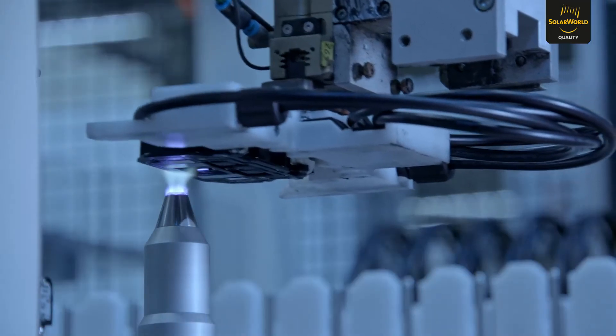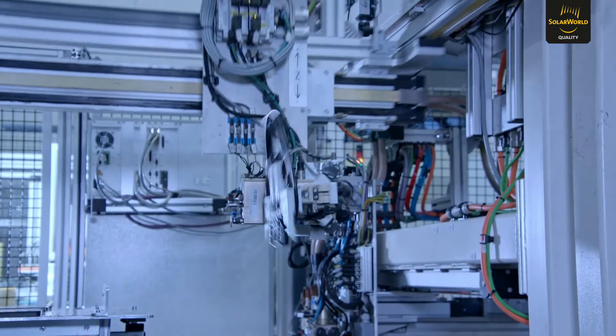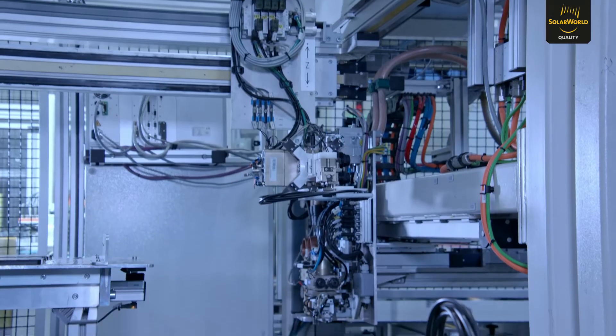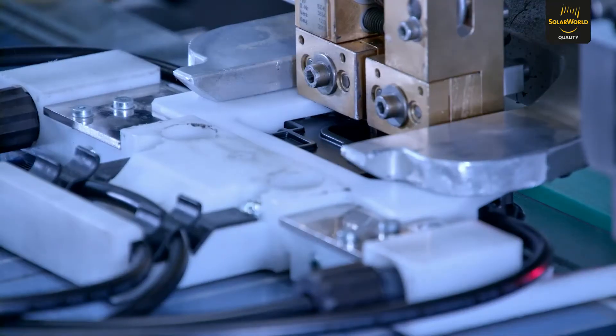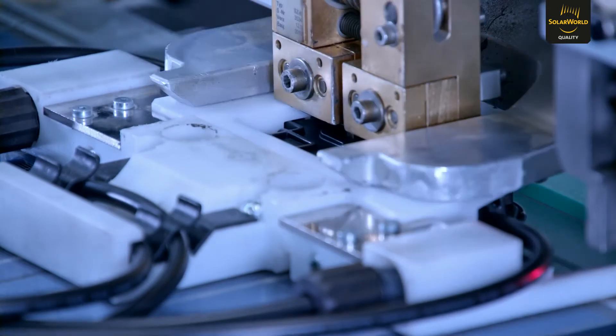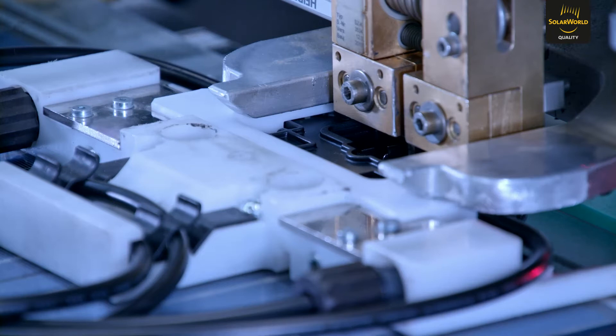Our quest for proven quality is even reflected in the parts that are hidden. For example, the flat junction boxes. Each socket and the bypass diodes it contains are checked automatically. Welding instead of soldering the connections ensures maximum safety, even under high loads.